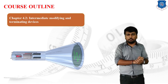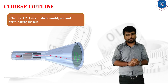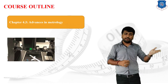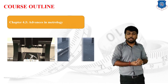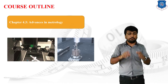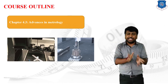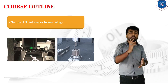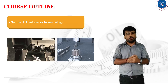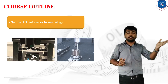For the electrical output on digital displays, we use CROs and similar devices via intermediate modifying and terminating devices. The third topic of Unit 4 is Advances in Metrology. As technology advances, we now use the CMM — Coordinate Measuring Machine — a very advanced instrument that can produce 3D output and design 3D objects using a single machine. We also use laser interferometry, which is useful for detecting minor changes in vibrations and frequency.